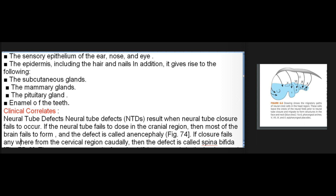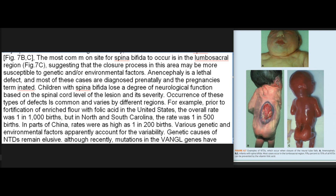Clinical correlates — Neural tube defects (NTDs) result when neural tube closure fails to occur. If the neural tube fails to close in the cranial region, then most of the brain fails to form, and the defect is called anencephaly. If closure fails anywhere from the cervical region caudally, then the defect is called spina bifida. The most common site for spina bifida to occur is in the lumbosacral region, suggesting that the closure process in this area may be more susceptible to genetic and/or environmental factors. Anencephaly is a lethal defect, and most of these cases are diagnosed prenatally and the pregnancies terminated. Children with spina bifida lose a degree of neurological function based on the spinal cord level of the lesion and its severity.